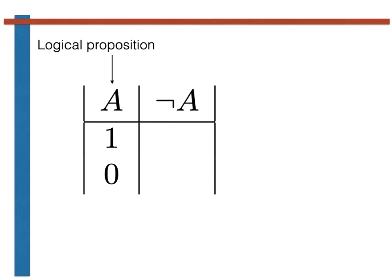The negation of the logical proposition A is written using the symbol shown here. Furthermore, as discussed on the previous slide, the negation of A is the proposition that is false whenever A is true, and true whenever A is false, as shown here.